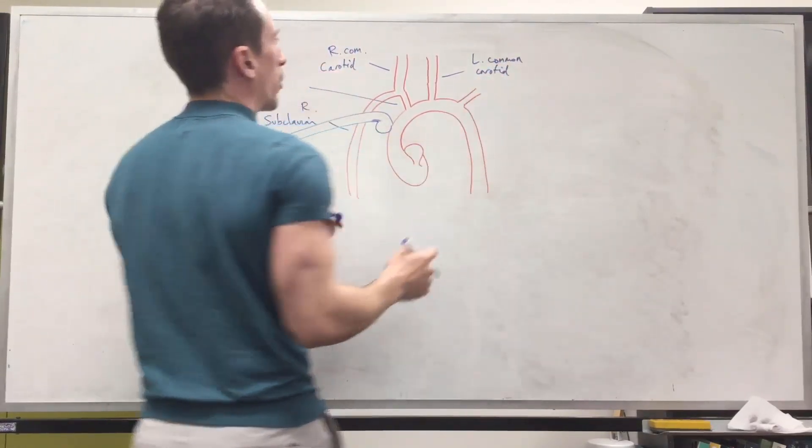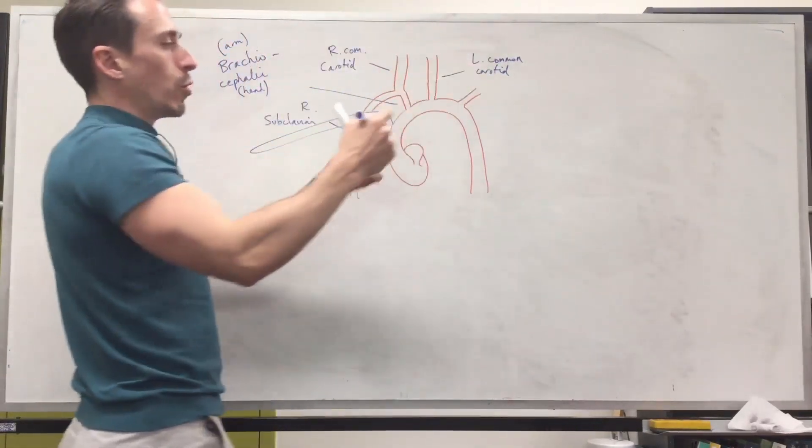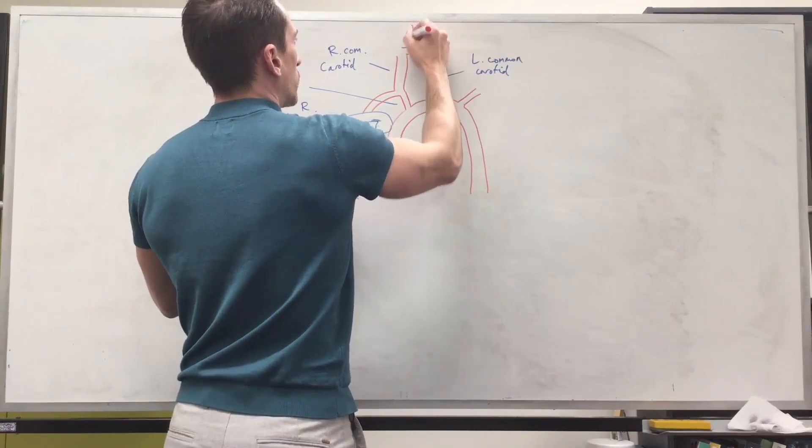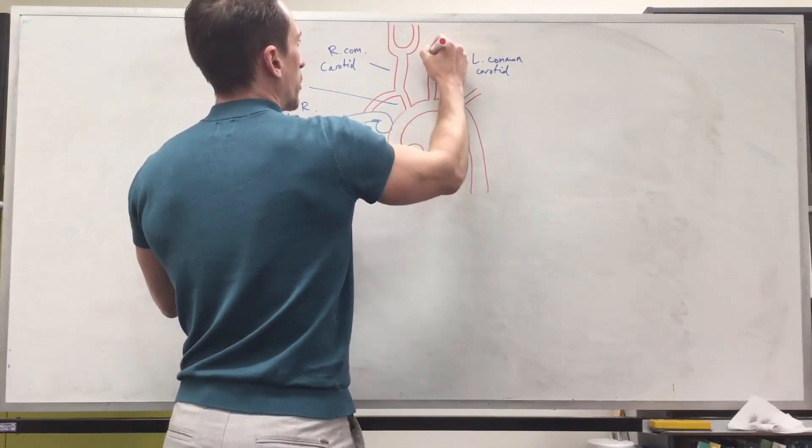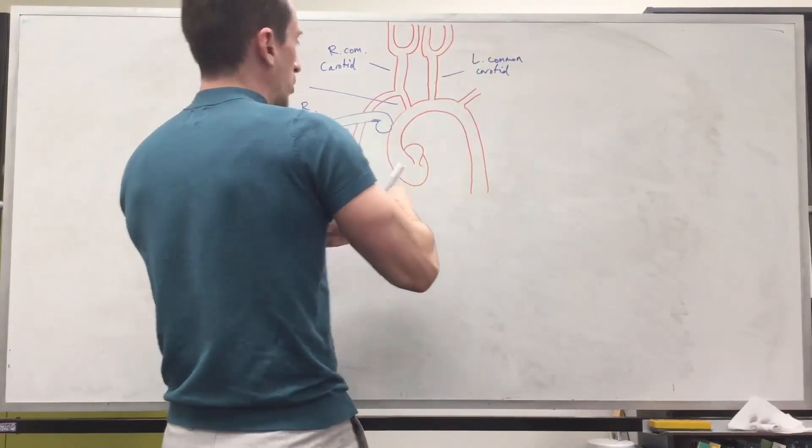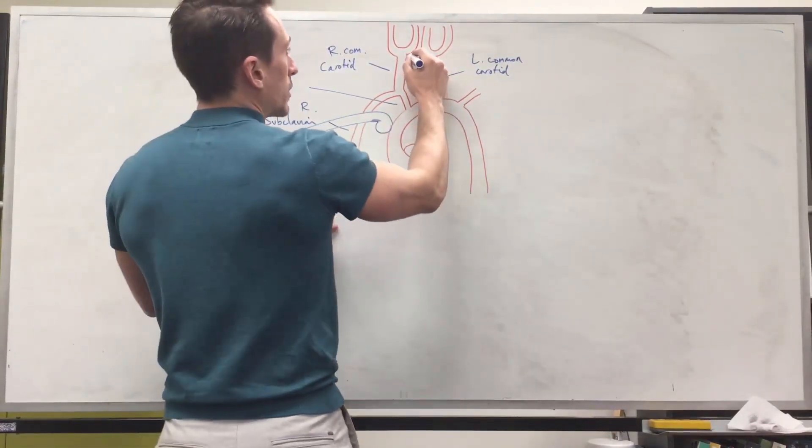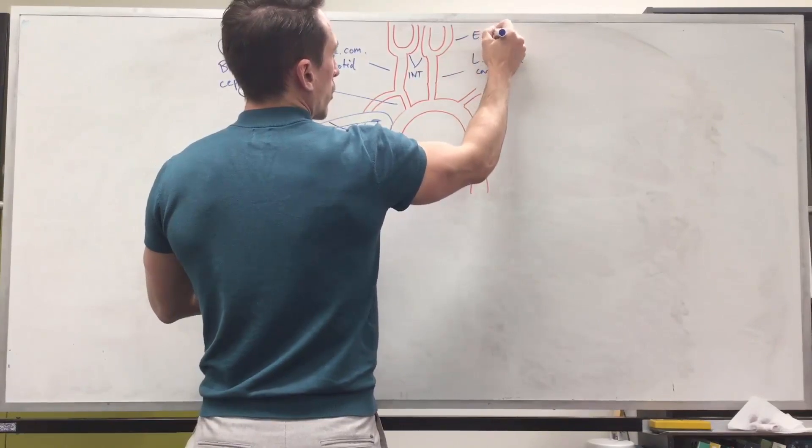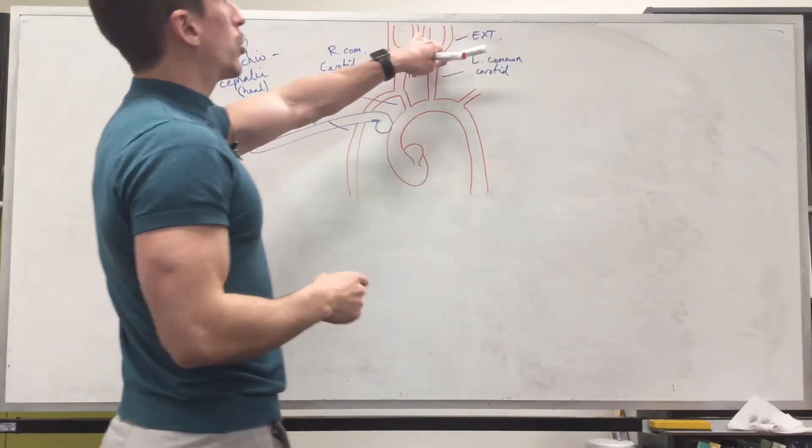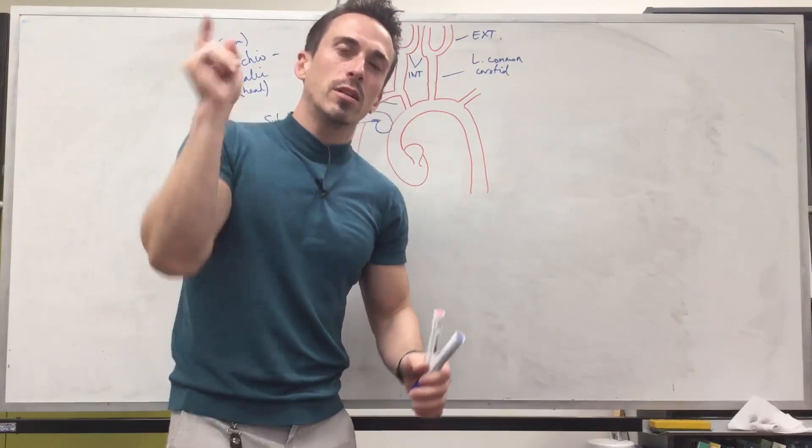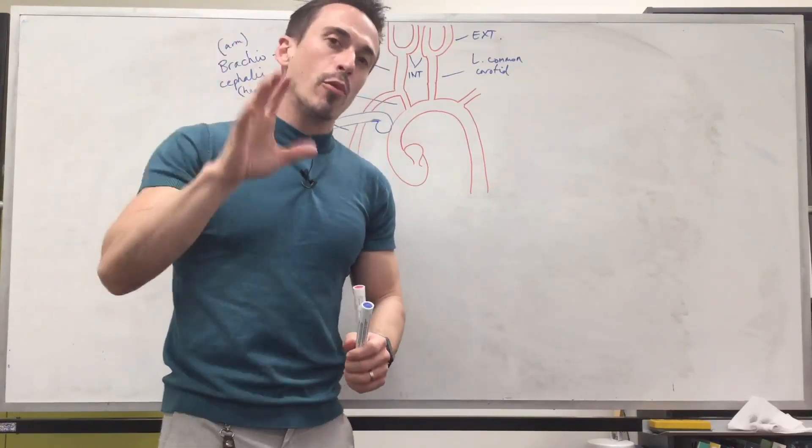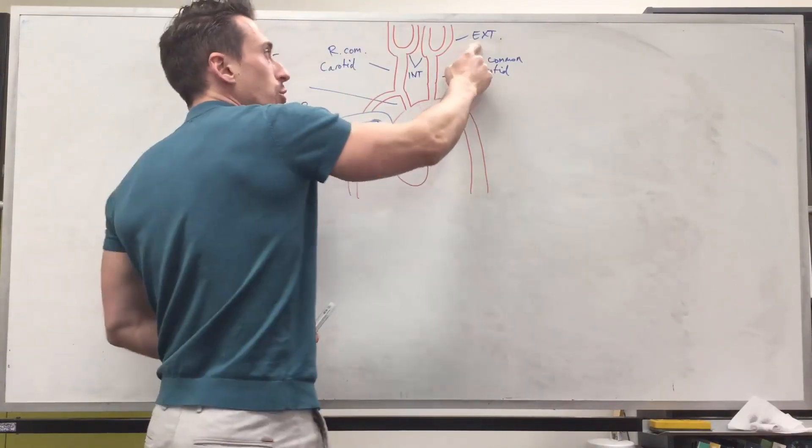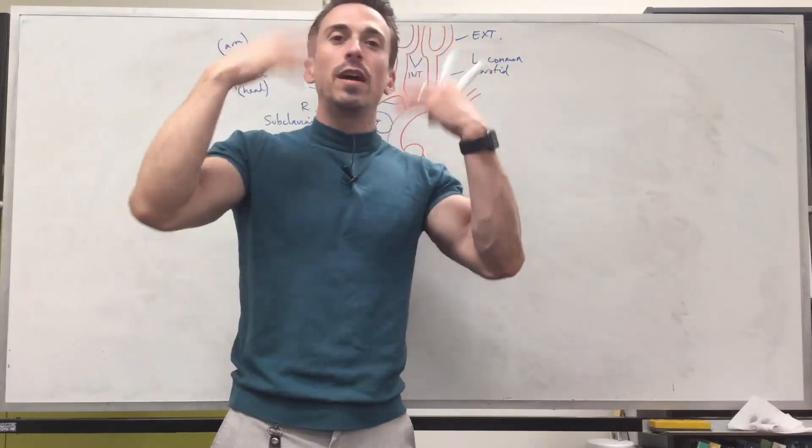And because they're common carotids they're going to branch off and give smaller branches and these smaller branches include the internal and external carotids. What's important about the internal and external? Well it's pretty easy, the one in the middle, they're internal, the ones on the outside they're the external carotids. What's important? The internal carotids they supply 80 to 85 percent of the brain's blood. The brain gets 80 to 85 percent of its blood from the internal carotids, not the external. The external gives blood to the face and neck.